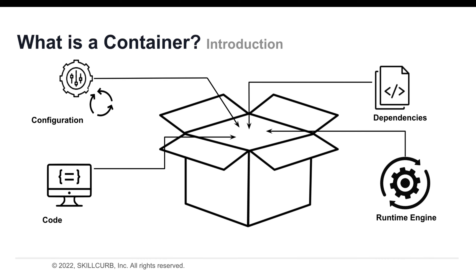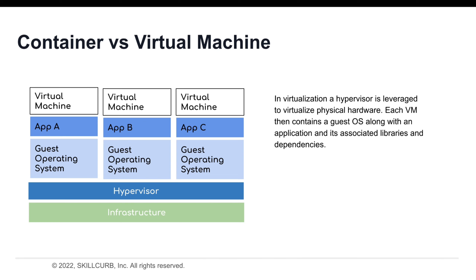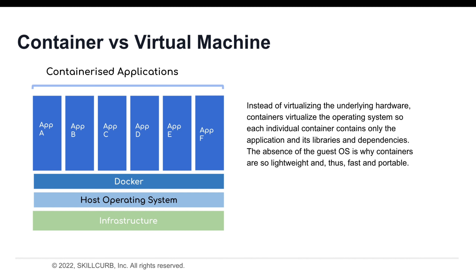Containers can be considered like virtual machines, but they're quite different. In virtualization, a hypervisor is leveraged to virtualize physical hardware. Each virtual machine then contains a guest operating system, a virtual copy of the hardware that the operating system requires to run, along with an application and its associated libraries and dependencies. Instead of virtualizing the underlying hardware, containers virtualize the operating system, so each individual container contains only the application, its libraries, and dependencies. The absence of the guest operating system is why containers are so lightweight, and thus fast and portable. Containers provide the isolation benefits of virtualization, with less overhead and faster starts than virtual machines.